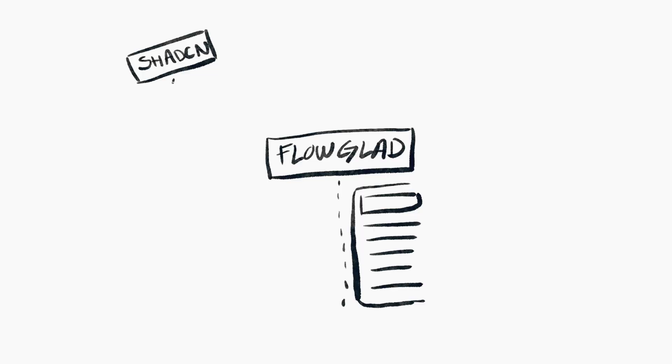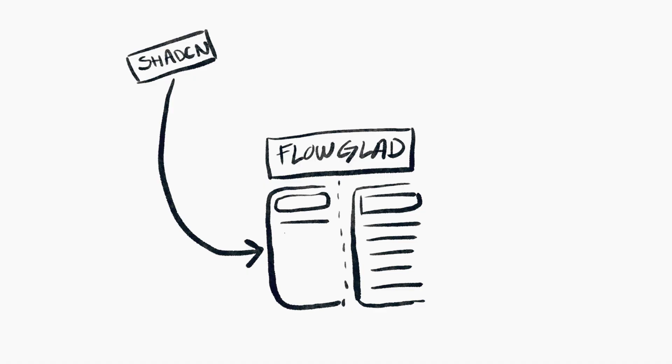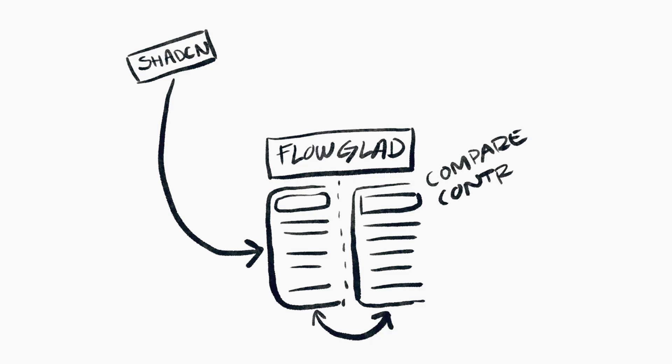Here's the workflow I'm thinking for Flowglad: we're going to bring in the Shad CN component as it comes, then compare and contrast the code and incrementally make changes to the sidebar to ensure that it looks the same. We're basically going to be copying code but making it work.